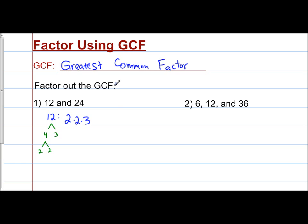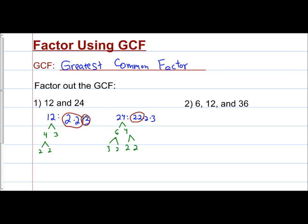We do the same thing with 24. 24 broken down into factors — I could have 6 and 4. Neither of these are prime, so I'm going to break them down even more. 4 is 2 times 2. 6 is 3 times 2. Now all of these are prime, and so 24 is the product of 2 times 2 times 2 times 3.